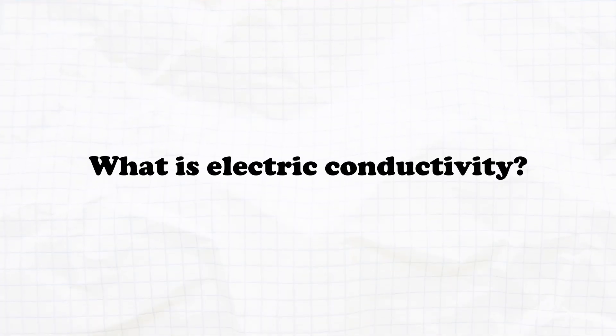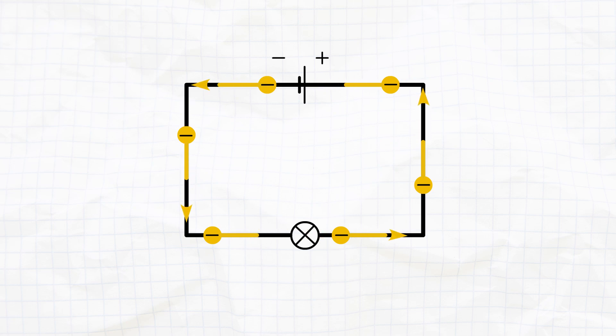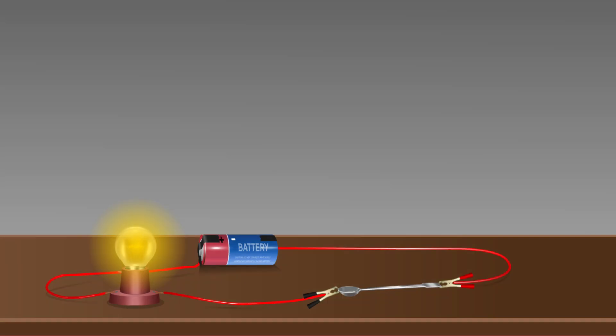What is Electric Conductivity? In an electric circuit, electrons flow from the negative terminal to the positive terminal of a cell. Electric conductivity is the ability of a material to allow the flow of electric current. This flow occurs when free electrons move through a material. But not all materials can do this.